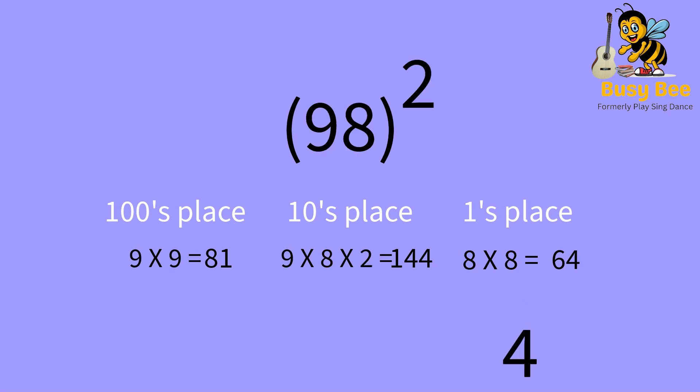Here, 4 is our ones place answer. Next, we will add 144 and 6, which is 150, and we will bring down the 0 as the tens place answer.